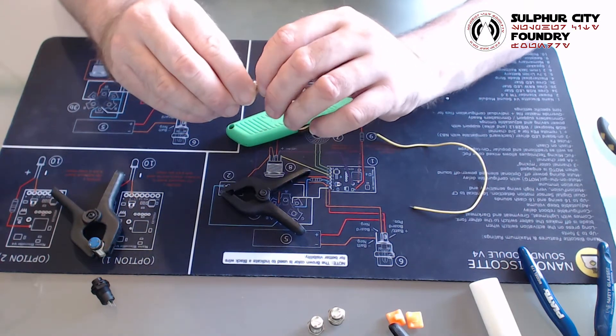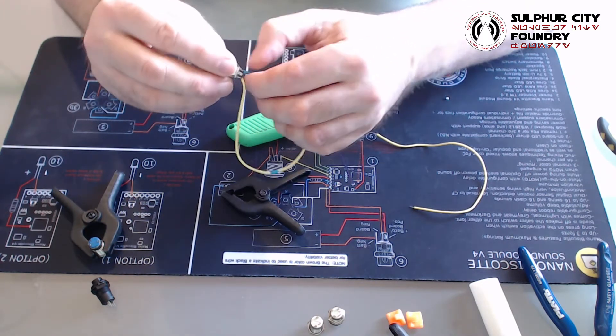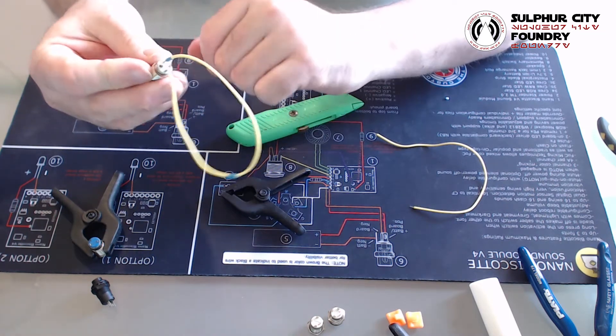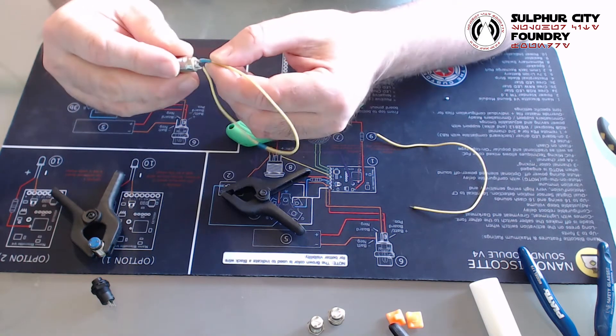Okay, here's another tip. Make sure you keep your heat shrink out the way if you pre-load it on your wire, because if it manages to fall down while you're soldering, it's going to heat shrink in the wrong place.